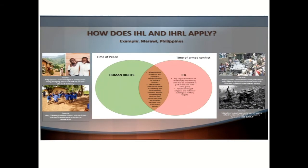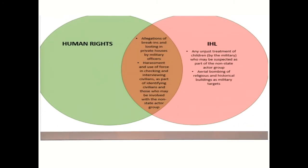Now, how does international humanitarian law and international human rights law apply? Let us take, for example, the recent case of 2017 in the Marawi crisis in the Philippines. In times of peace, you have human rights law coming into force, and in times of war, you have international humanitarian law. Under IHRL, any unjust treatment of children by the military who may be suspected as part of non-state actor groups should be protected. It is also not allowed that aerial bombing of religious and historical buildings be done as military targets. However, there are allegations of break-ins and looting in private houses by military officers, and harassment and use of force in checking and interviewing civilians as part of identifying those who may be involved with a non-state actor group. These are cases where human rights and IHL come into effect.